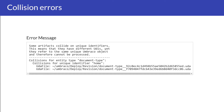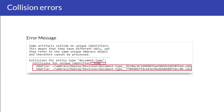This is how a collision error looks like on Umbraco Cloud. We can see that two UDA files are in the revision folder, which contains exactly the same alias. In our case, it is for a document type called home.